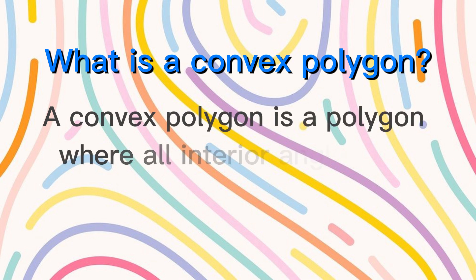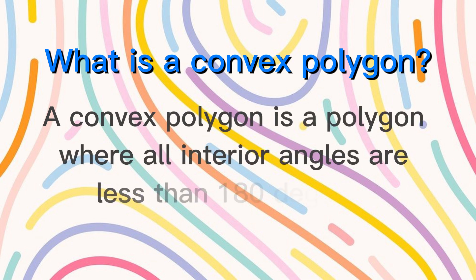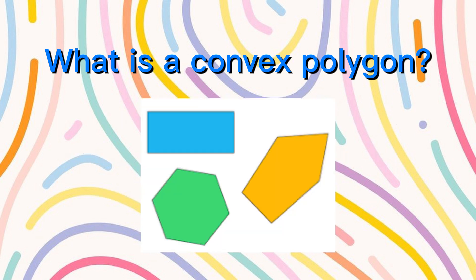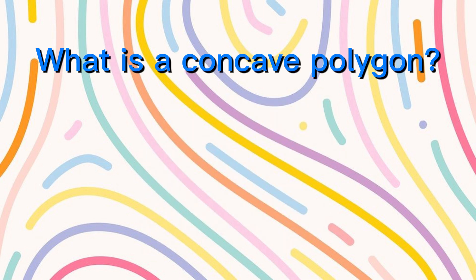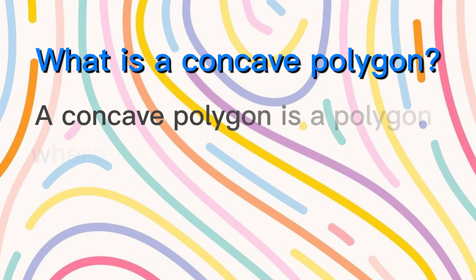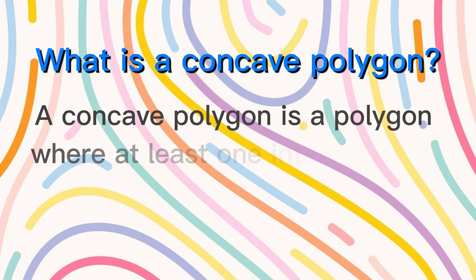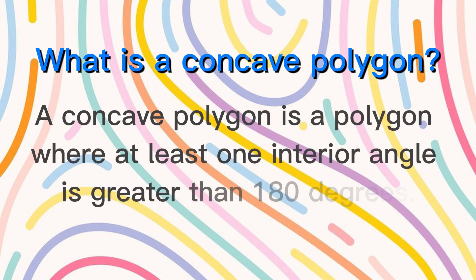What is a concave polygon? A concave polygon is a polygon where at least one interior angle is greater than 180 degrees.